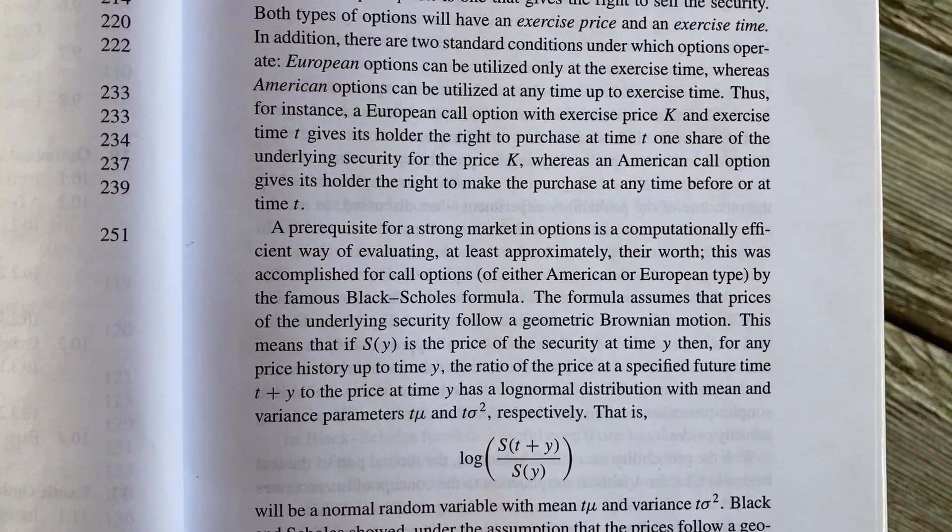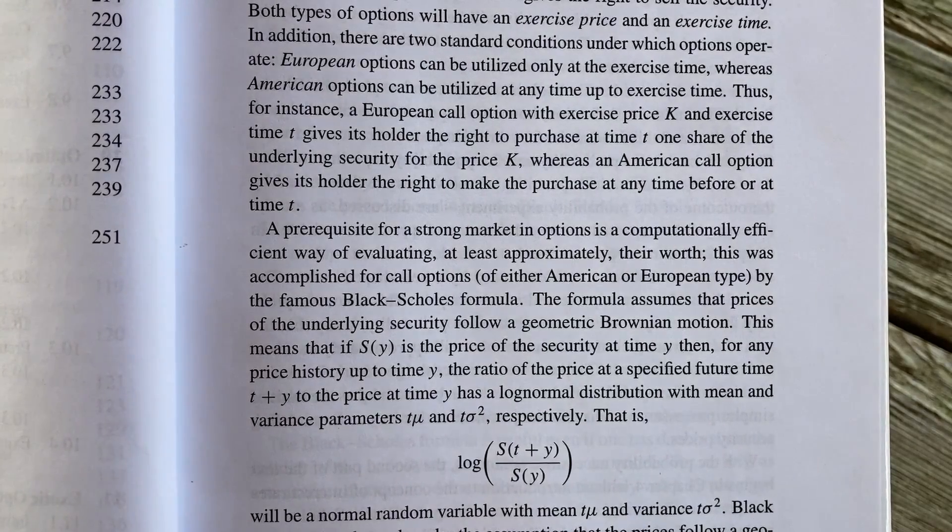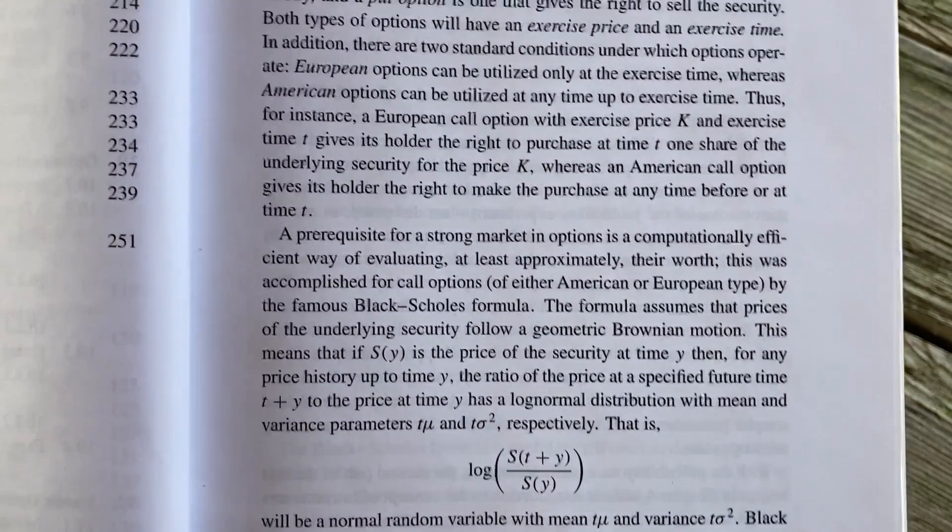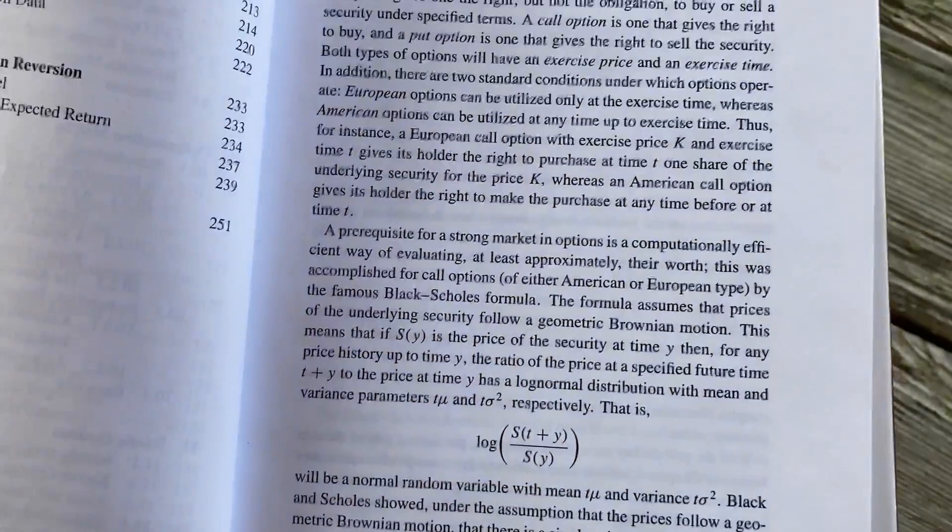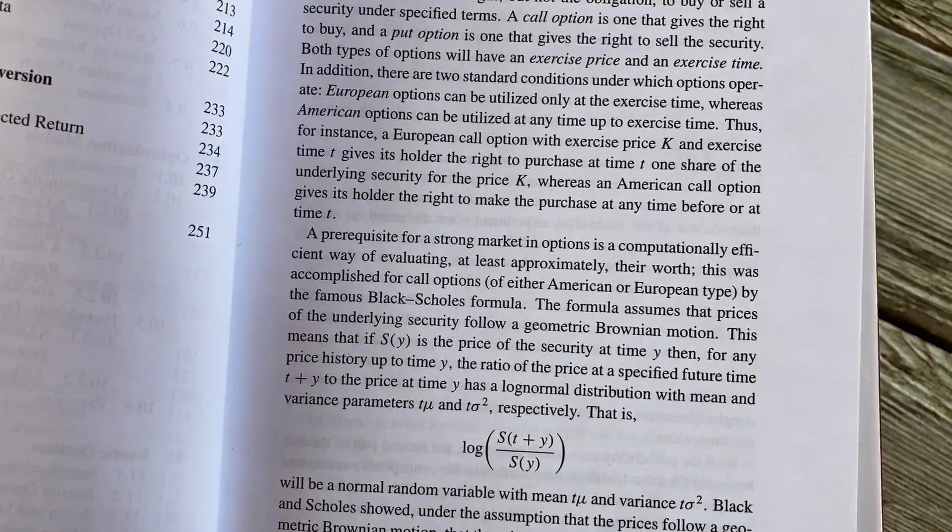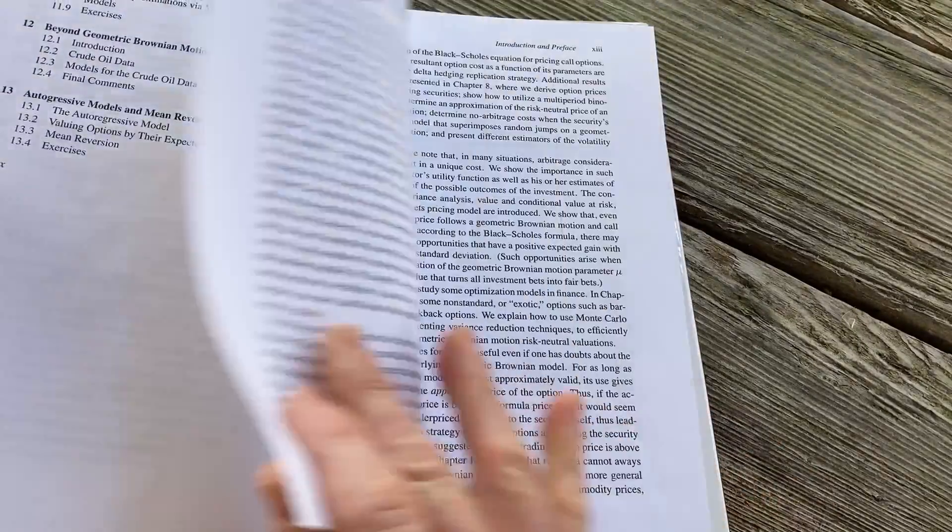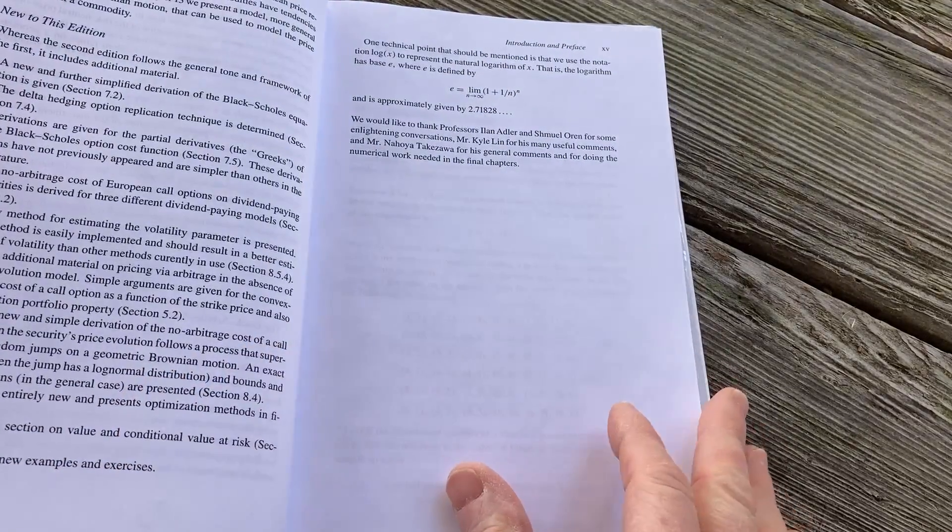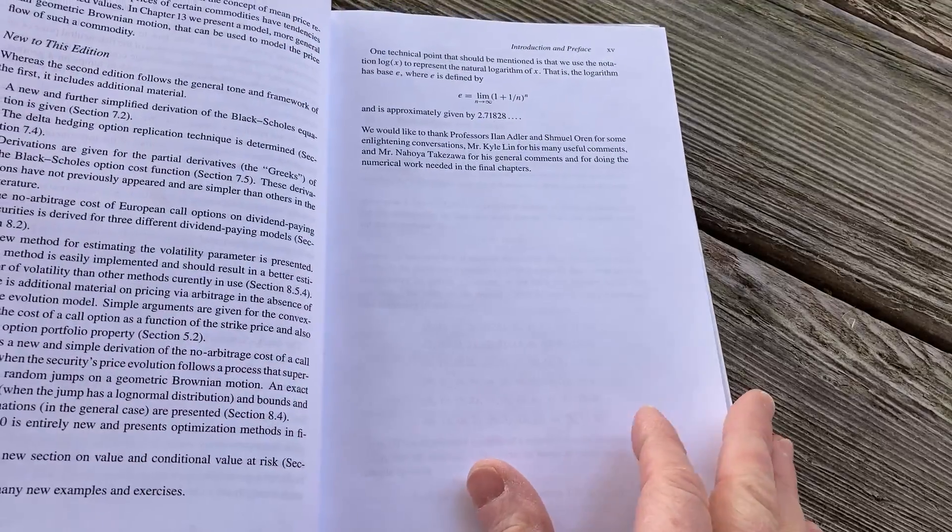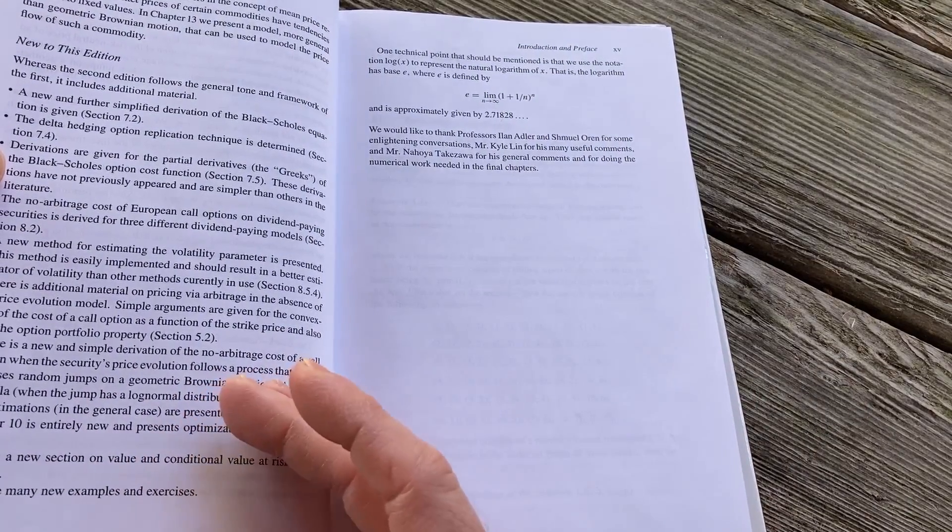It says a prerequisite for a strong market options is a computationally efficient way of evaluating at least approximately their worth. This was accomplished for call options of either American or European type by the famous Black-Scholes equation. I believe these people, you know, they won the Nobel prize for this. The formula assumes that prices of the underlying security follow a geometric Brownian motion. And it goes on and talks more about that there. Let's just skip all that and go to the beginning. That gives a kind of like an overview.